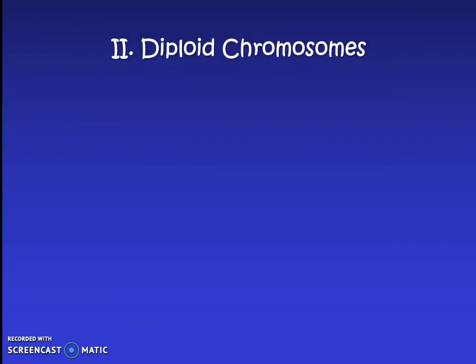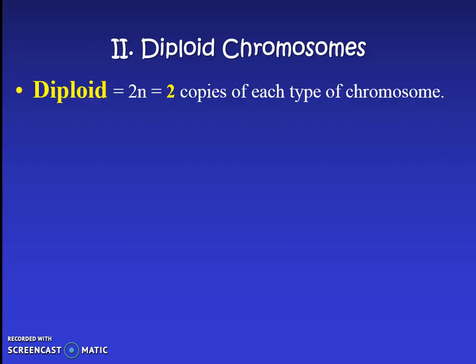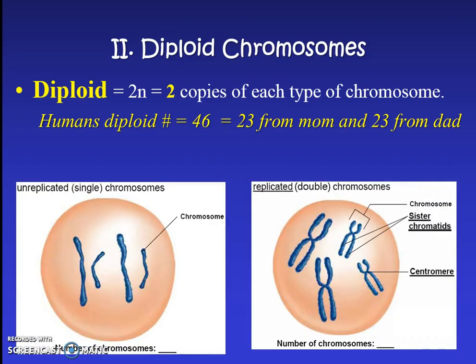We're going to learn this new word: diploid. Diploid has the prefix 'di' meaning two. Diploid chromosomes mean that we have two copies of every chromosome. Humans have a diploid number of 46 — this is the normal amount — meaning we have 23 chromosomes from mom and 23 from dad. Diploid means we have two of the same-size chromosomes. For example, two big ones and two little ones — that's diploid, with a chromosome number of four.